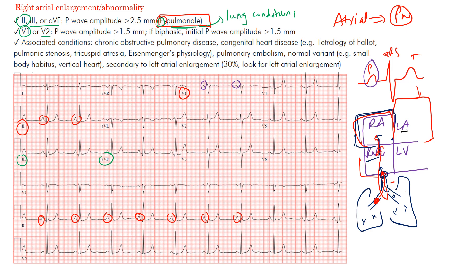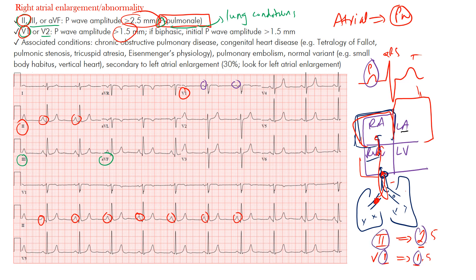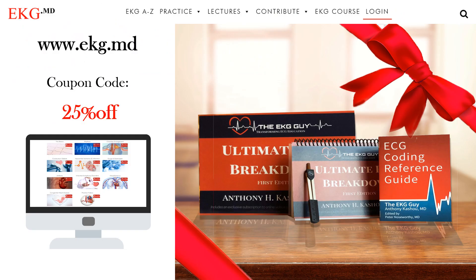To summarize: right atrial enlargement criteria presume sinus rhythm is in place. The best leads are lead 2 and V1. In the inferior leads, you're looking for at least 2.5mm in P-wave amplitude; in lead V1, at least 1.5mm. A helpful memory tip: lead 2 goes with 2.5, and lead V1 goes with 1.5.